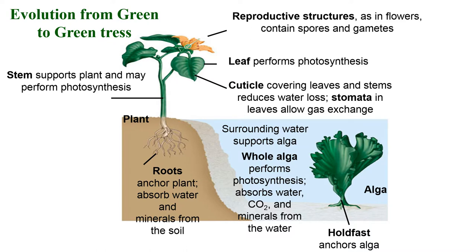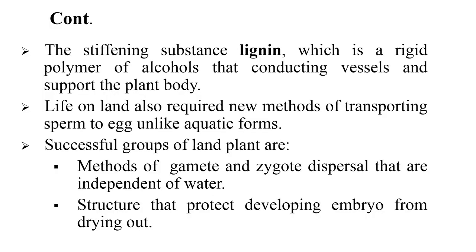The resulting adaptations from water to land include structural features that are now common to all land plants. These include root or root-like structures, reproductive structures such as flowers and cones, pores and gametes, stems that support the plant and may perform photosynthesis, leaves that perform photosynthesis and contain cuticles, a waxy cuticle that covers the stem and leaves, and stomata — tiny pores in the leaves that allow for gas exchange. Land plants also contain the stiffening substance called lignin, a rigid polymer of alcohol that supports the plant body helping it expose maximum surface area to sunlight.